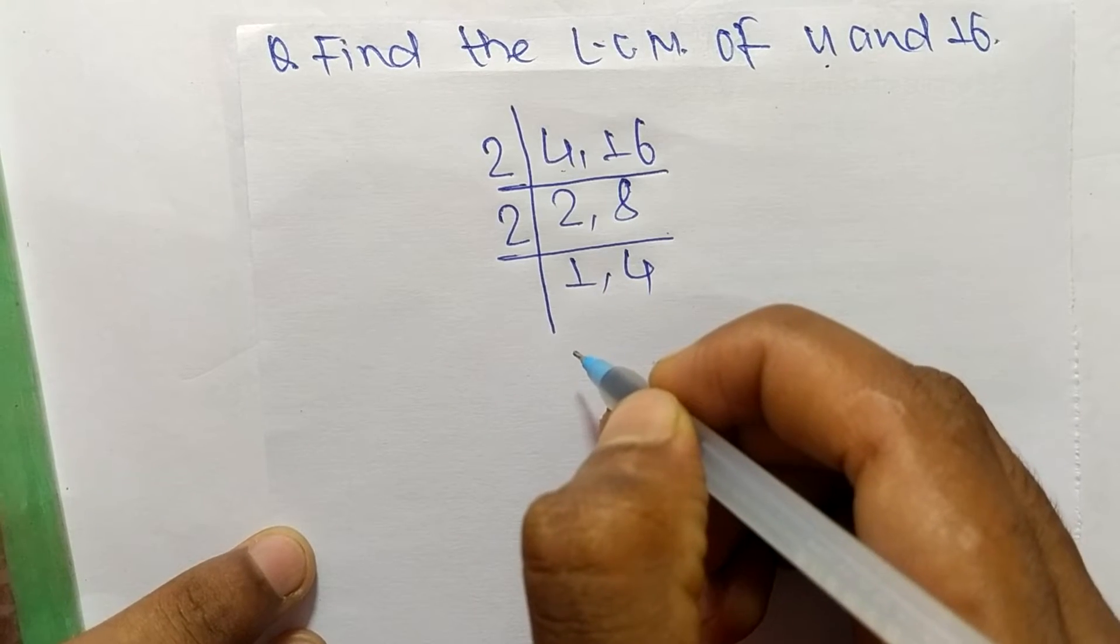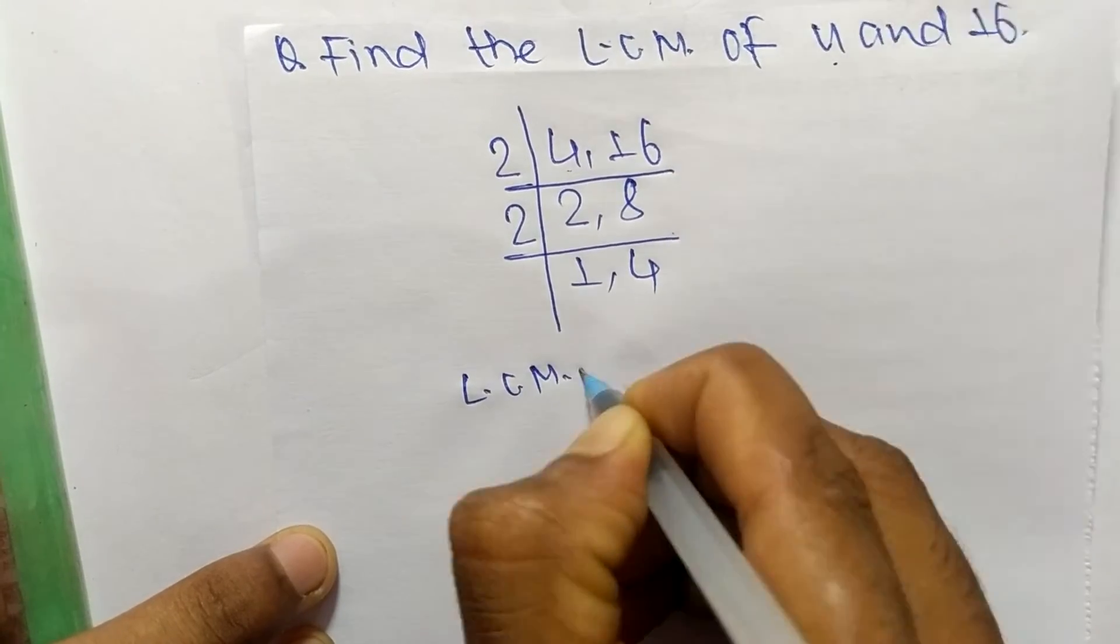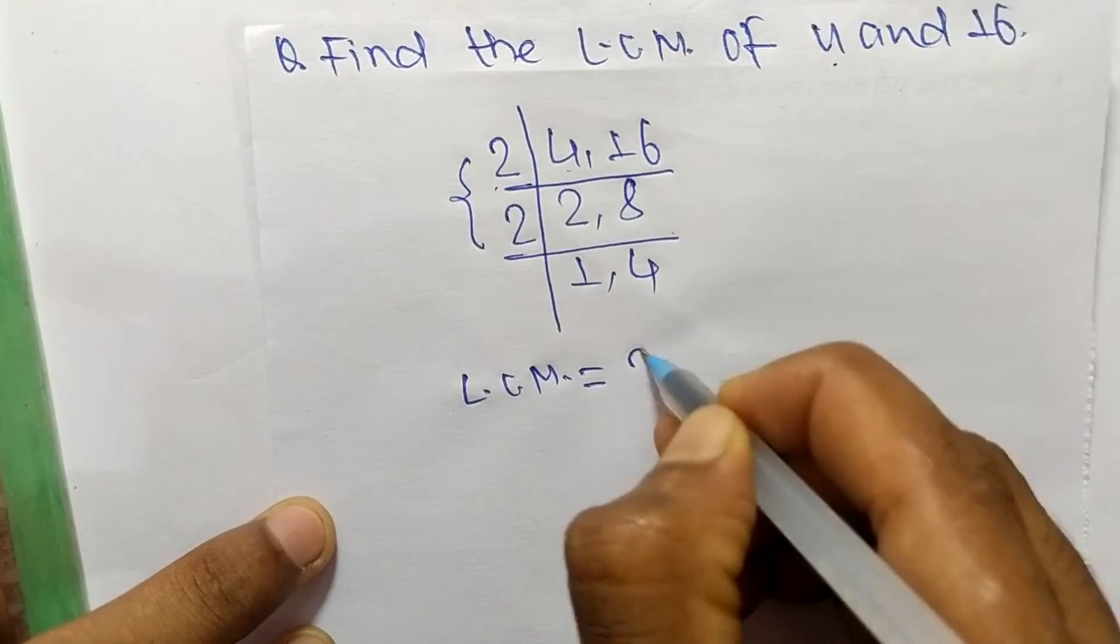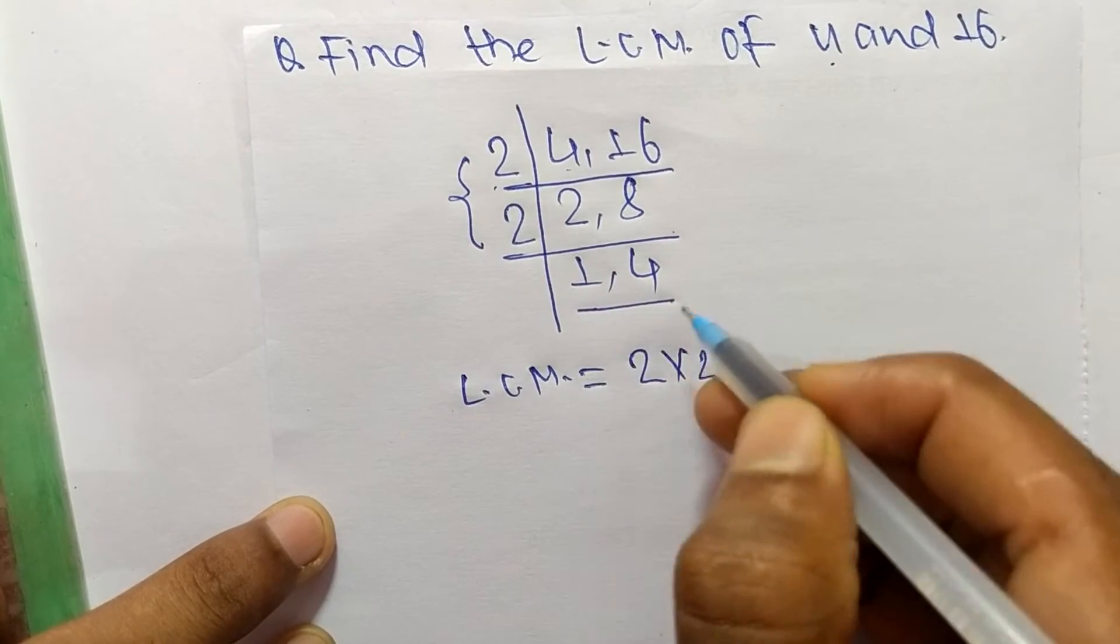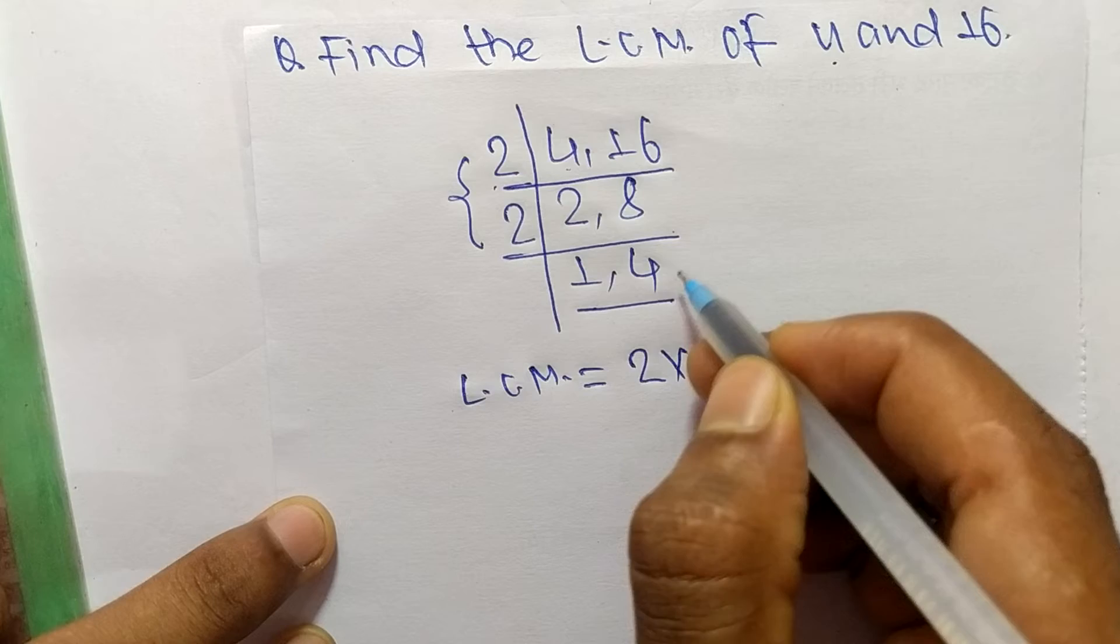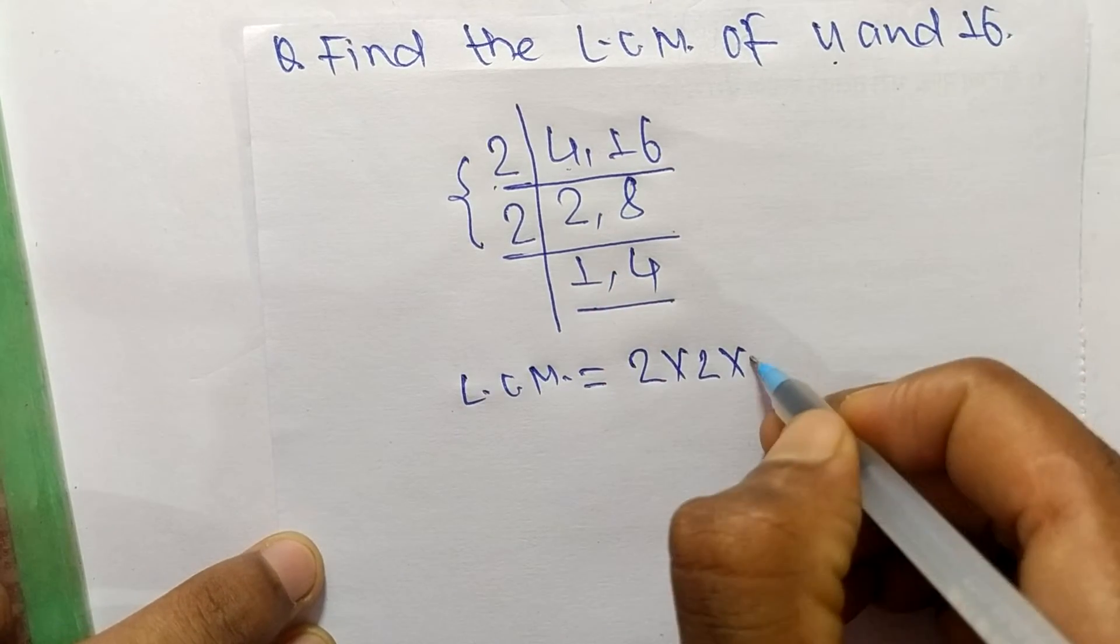The LCM is equal to 2 times 2 from this part, and from this part we take only 4, because multiplying by 1 we get the same result.